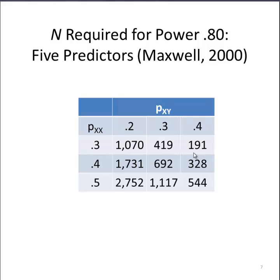That's the smallest sample size you can get with the n required for a power of 80, based on medium effect sizes, based on Maxwell's work. If you have fairly larger correlations between your independent variables in the magnitude of 0.5, which is very possible, you would need a sample size of 2752 if the correlation between your independent variables and your dependent variable, on average, is equal to 0.2. This is a plausible scenario in some cases — a whopping sample size of 2752.